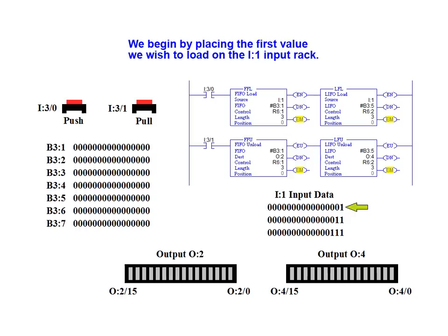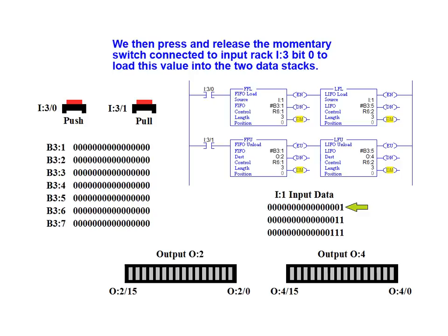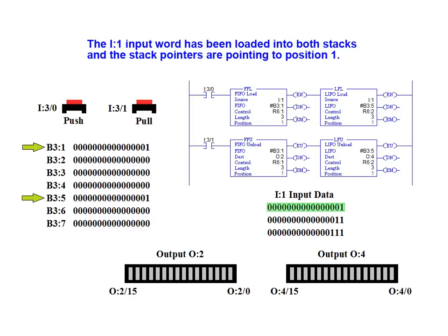We begin by placing the first value we wish to load on the I:1 input rack. We then press and release the momentary switch connected to input I:3, bit 0, to load this value into the two data stacks. The current I:1 input word has been loaded into both stacks and the stack pointers are pointing to position 1.